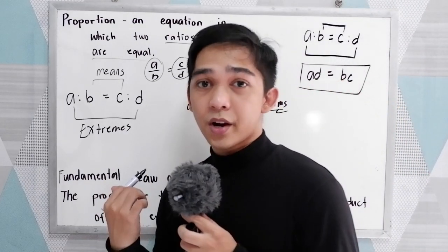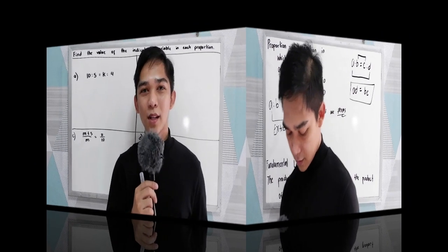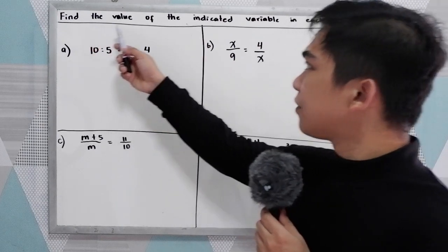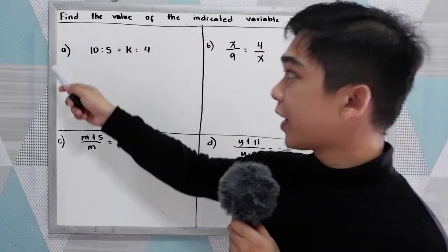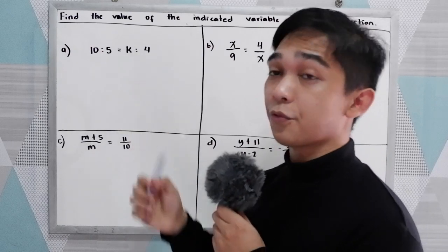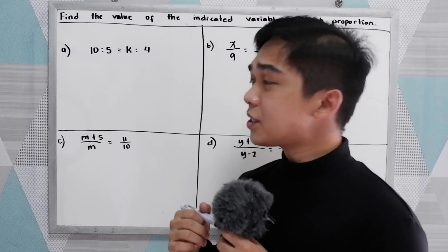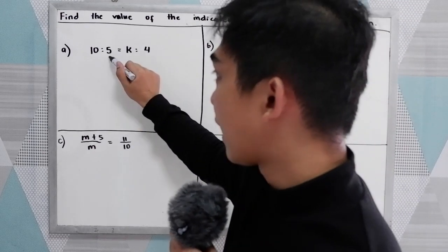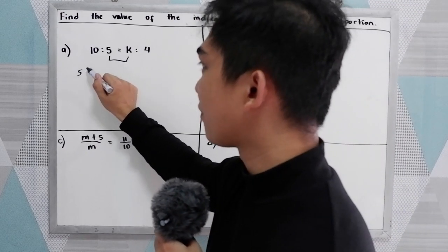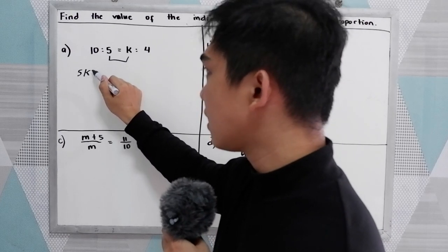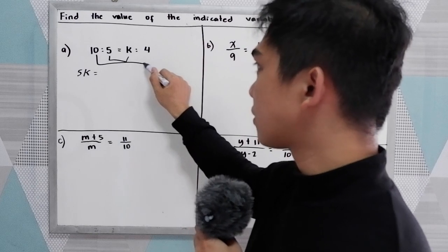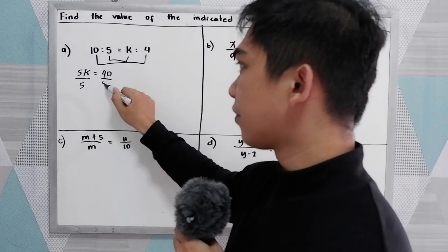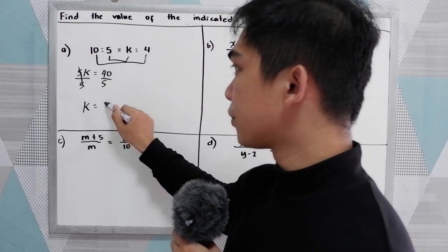Now let us apply the fundamental law of proportion to solve some problems. Find the value of the indicated variable in each proportion. Letter A: 10 is to 5 is equal to K is to 4. Using the fundamental law, the product of the means 5 times K equals 5K, is equal to the product of the extremes 10 times 4, that is 40. Dividing by 5, K equals 8.